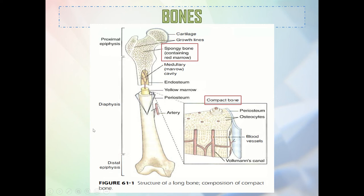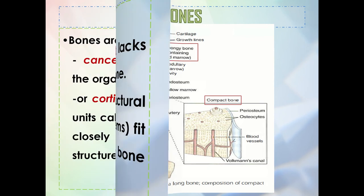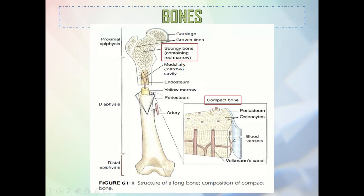Looking at a long bone cross-section, we can see that compact bone is really dense. This is how our compact bone looks — very made up of collagen, very compact, hence it is called compact bone. The spongy bone, on the other hand, has spaces, which is why it is called trabecular or spongy. It also contains red marrow within the trabeculae.